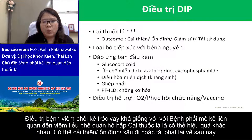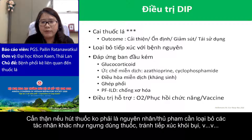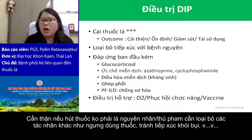Treatment of DIP is quite similar to RB-ILD. The outcome of smoking cessation varies — it could be improved, stable, deteriorated, or relapsed later in life. Be careful: if smoking is not the cause, the culprit exposure should be removed, such as discontinuing medication, treating the infection, or avoiding dust exposure.